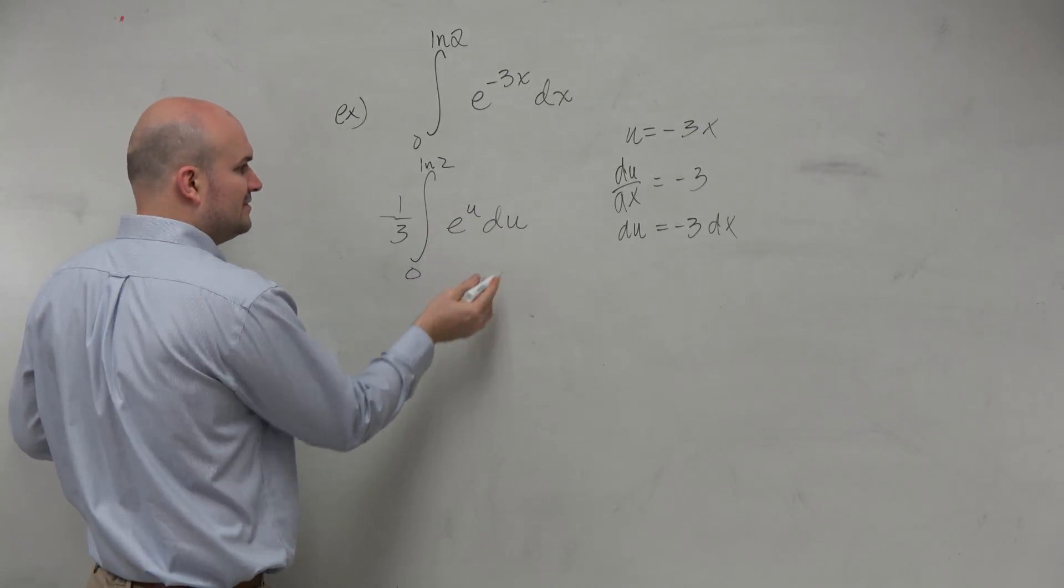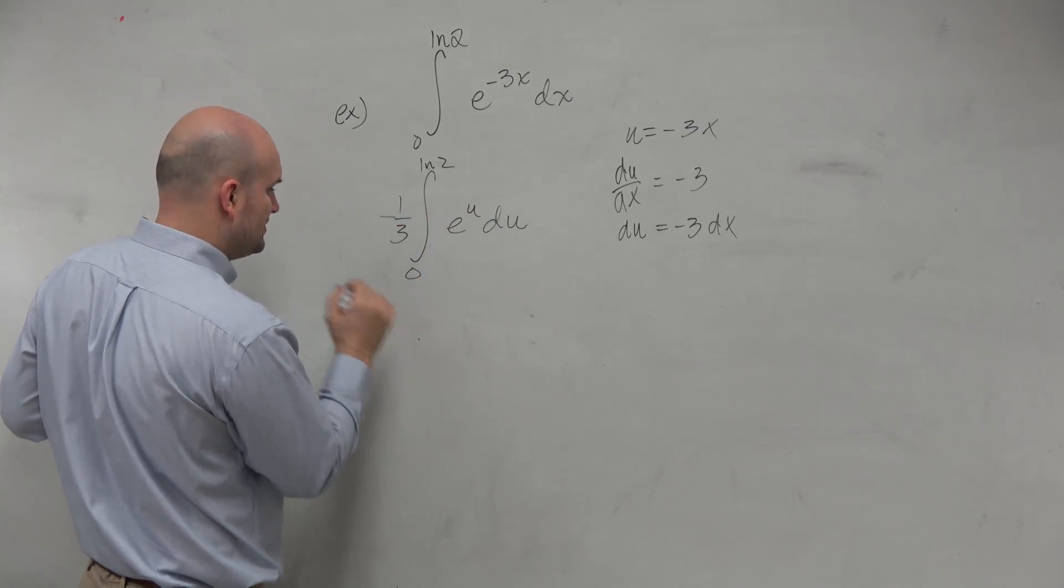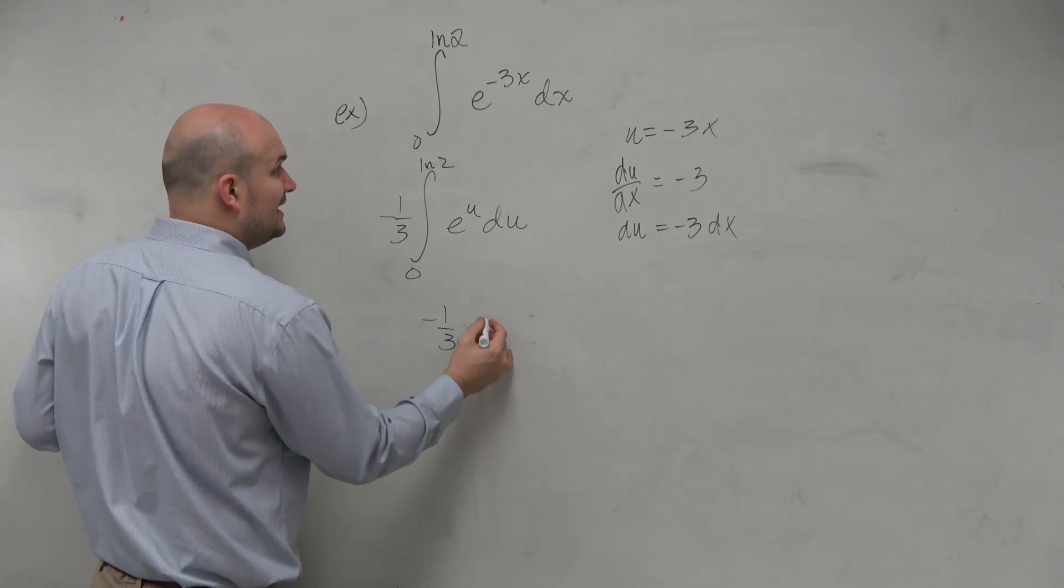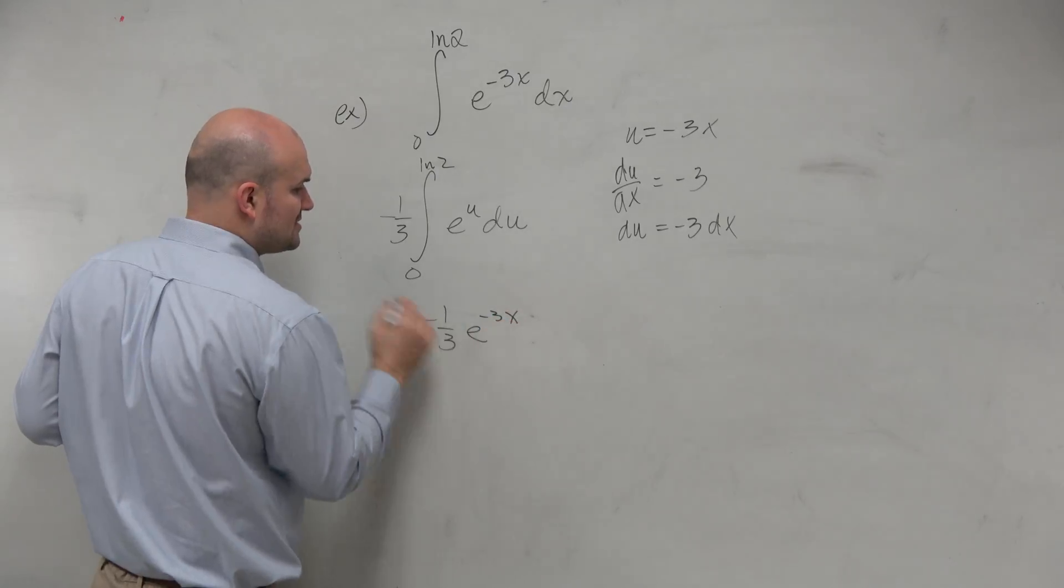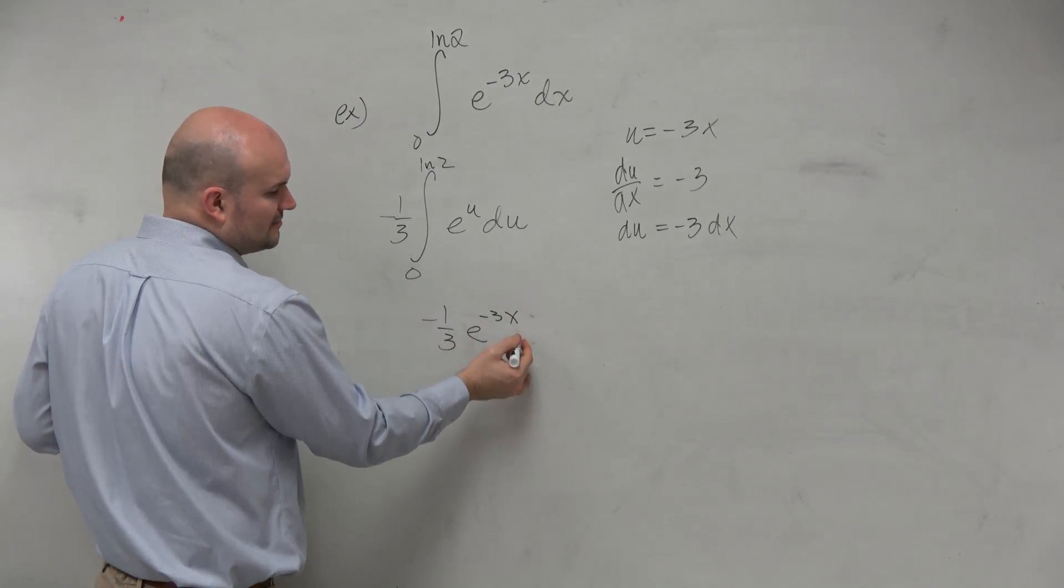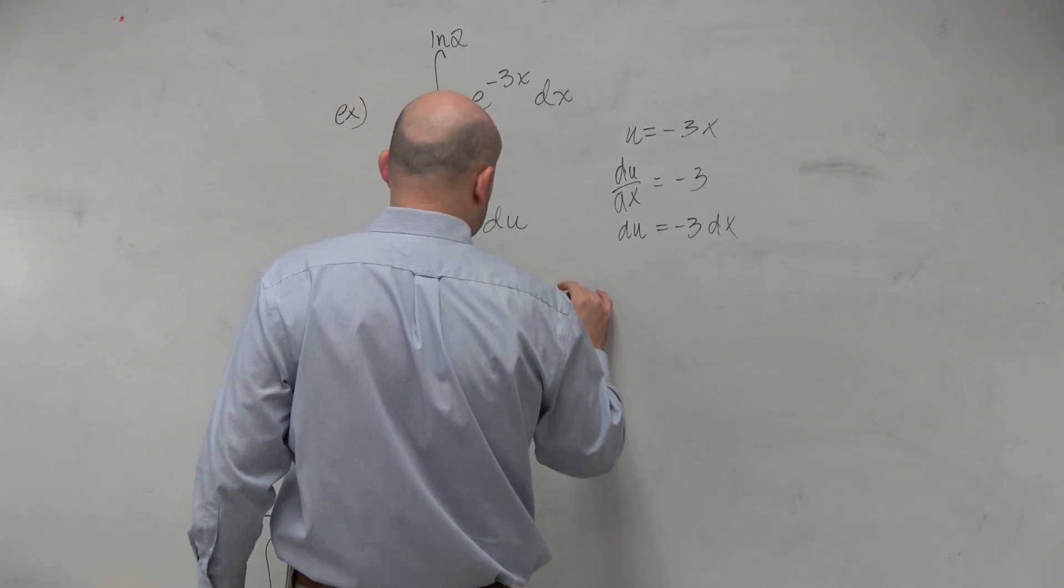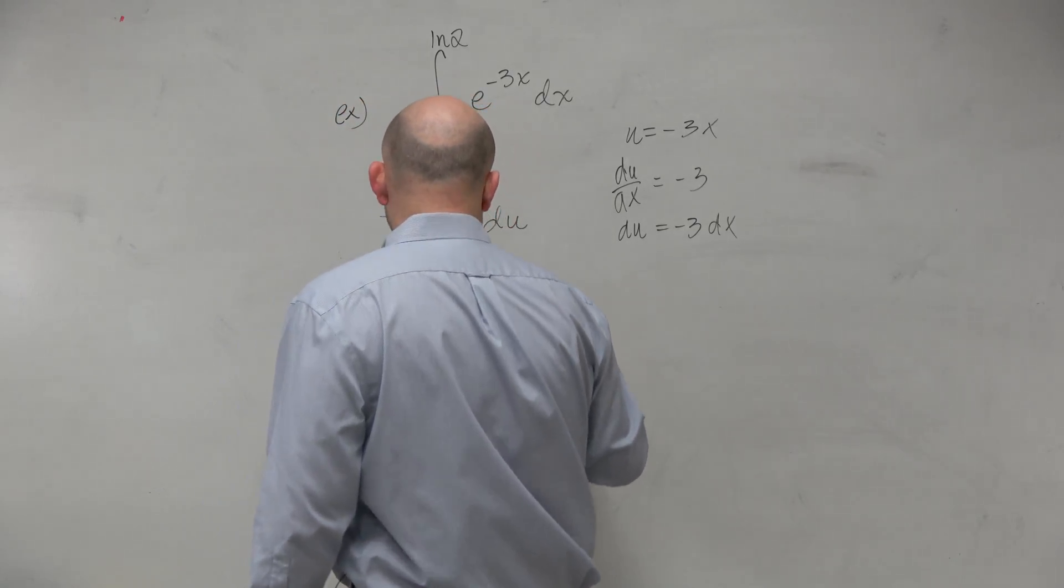So therefore, if we're finding the integral of this, we're going to have negative 1/3 e to the u, which is negative 3x. And then again, we don't need to add the plus c, because we need to evaluate this for ln of 2 over 0.